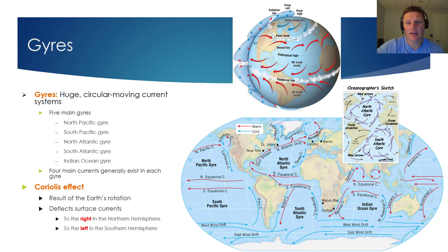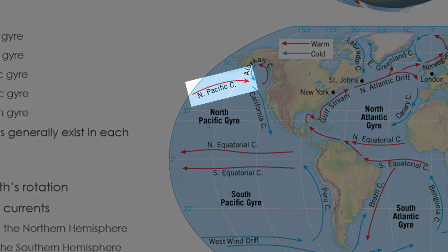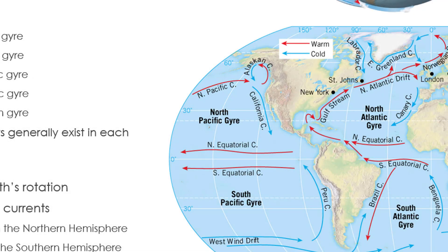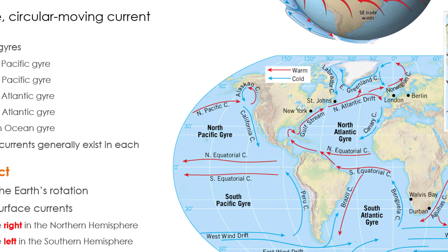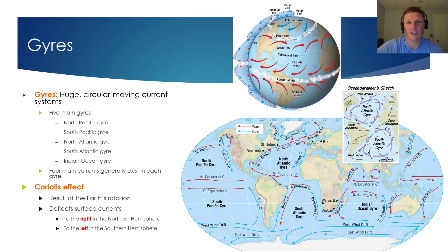To explain what I mean when I say deflect to the right, let's focus on the North Pacific current. If we start at the tail of the current and draw a line to predict the straight line theoretical path, the actual arrow for the North Pacific current deflects off to the right of this line. Now let's go to the southern hemisphere and focus on the Peru current. If we start at the tail once again and draw a straight line path for the current, the Peru current deflects left and travels up the western coast of South America. You might note some exceptions to these deflection rules due to the existence of land masses, but generally speaking, the Coriolis effect is what's responsible for gyres rotating clockwise in the northern hemisphere and counterclockwise in the southern hemisphere.